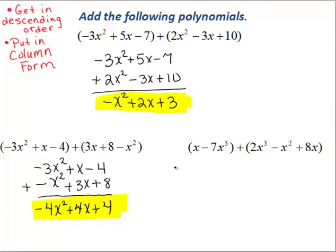So we have x minus 7x cubed plus 2x cubed minus x squared plus 8x. We notice that in the first polynomial expression we are missing an x squared term.